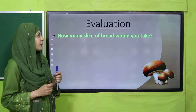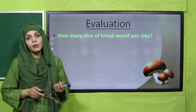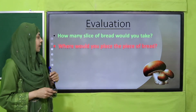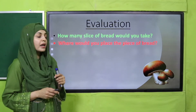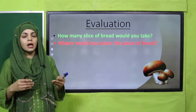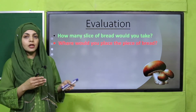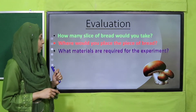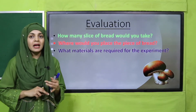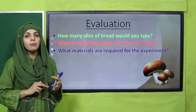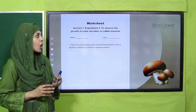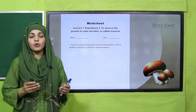Evaluation questions: How many slices of bread would you take? We will take three slices according to the experiment. Where would you place the piece of bread? In the ziploc bag, outside the fridge at normal room temperature. What materials are required for the experiment? Ziploc bags, bread, and a marker.